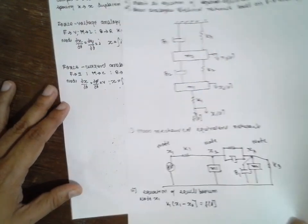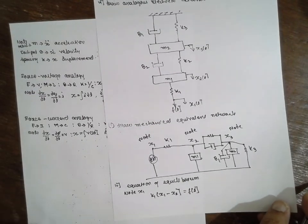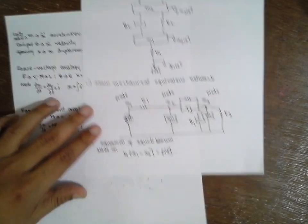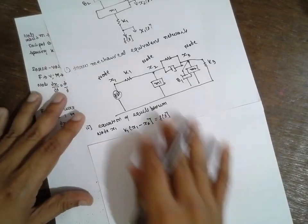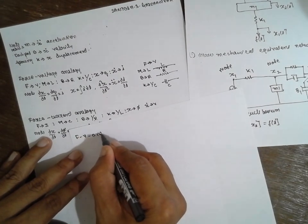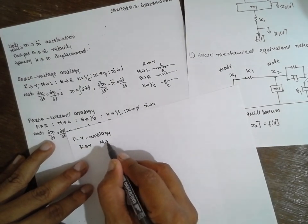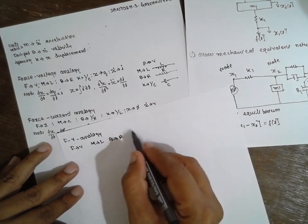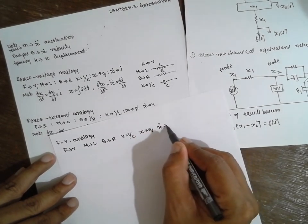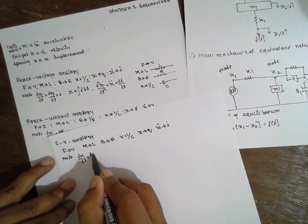Now I will use the formula table. I will use or convert it into the force-voltage analogy. In the force-voltage analogy: force is replaced with V, M is replaced with L, B is replaced with R, K is replaced with 1/C, and x is replaced with Q.